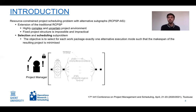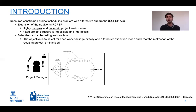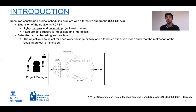Therefore, we have proposed an extension called the Resource Constrained Project Scheduling Problem with Alternative Subgraphs (RCPSP-AS). In this problem, we identify work packages — sub-projects within the project — and alternative ways to execute each work package. As a result, there is now a combination of a selection and a scheduling subproblem.